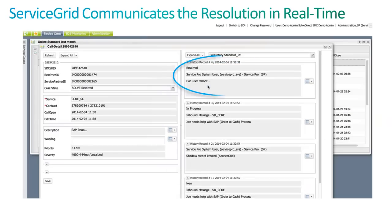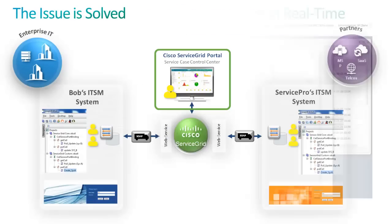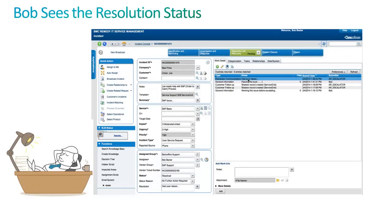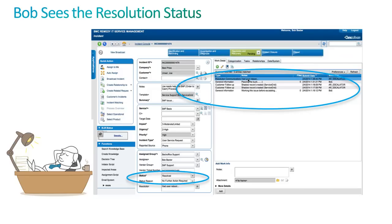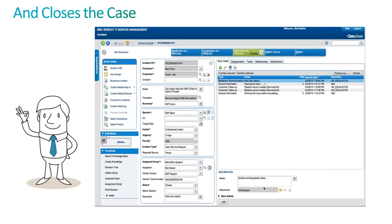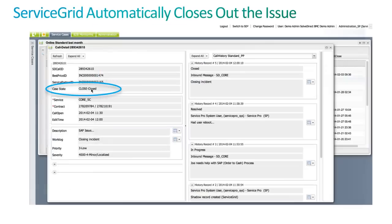If we look in Service Grid, we see the issue shows resolved. This information also shows up in Bob's ticketing system, and if Bob is happy with the resolution, he can close the case out. Bob receives the update that the issue was marked resolved and sees the instructions to reboot his computer. He is happy with the resolution, so he changes the resolve status to close. In Service Grid, we see that the case shows up as closed. When Bob closed the ticket in his ticketing system, Service Grid automatically closes it out in the vendor's queue, causing the issue to drop off the vendor's ticketing system without them having to do anything.